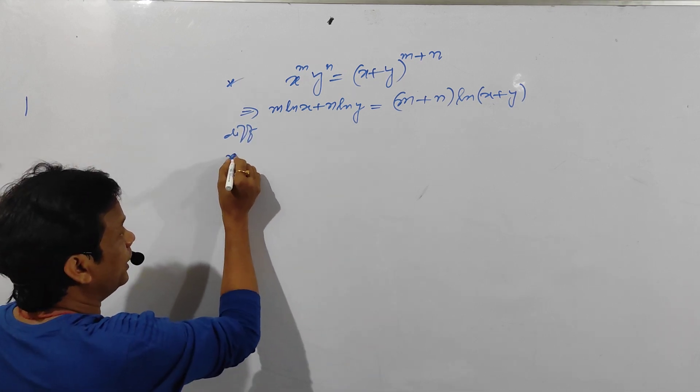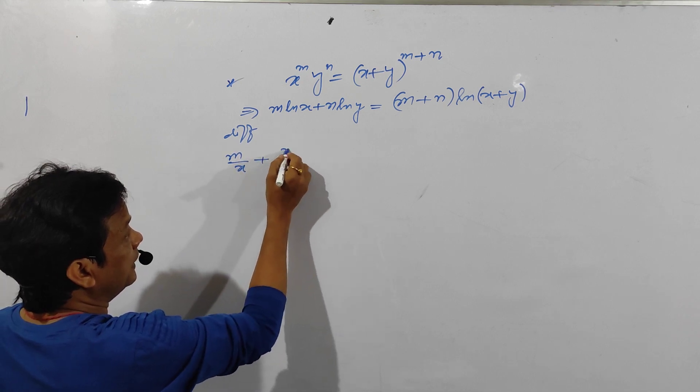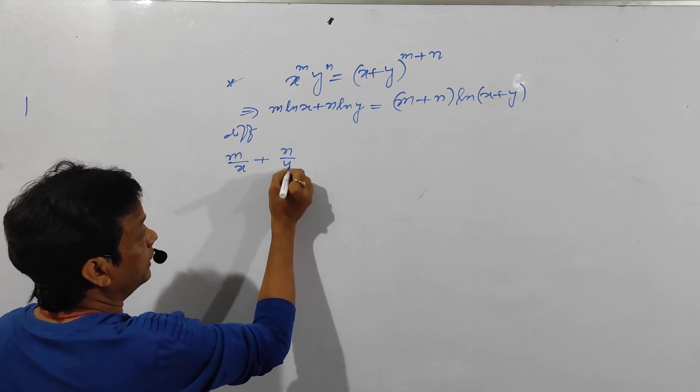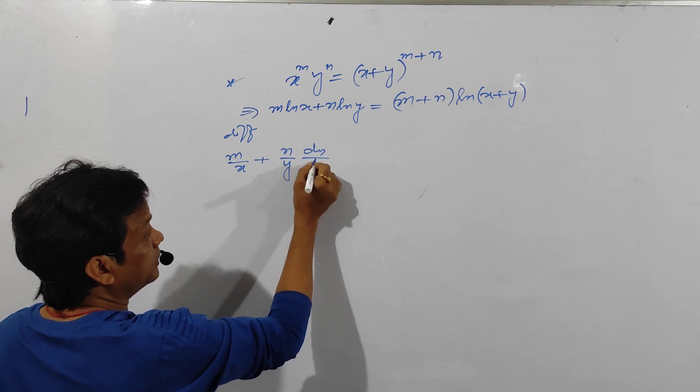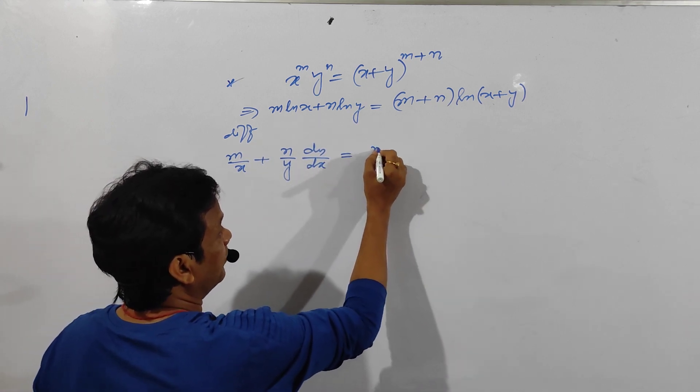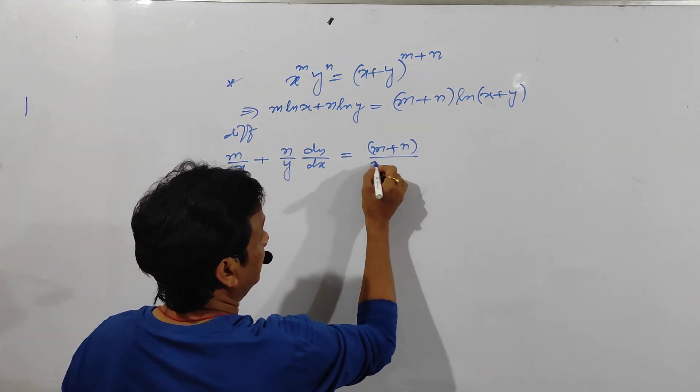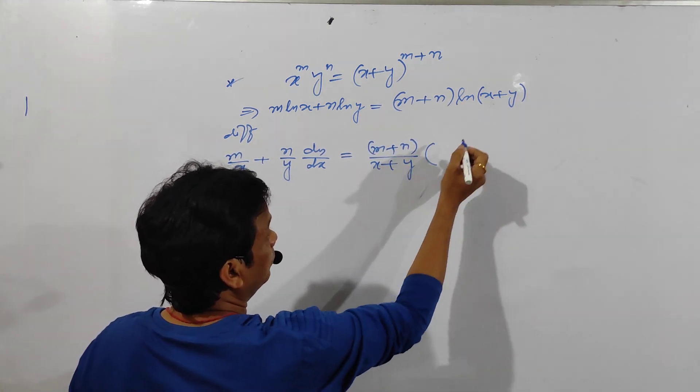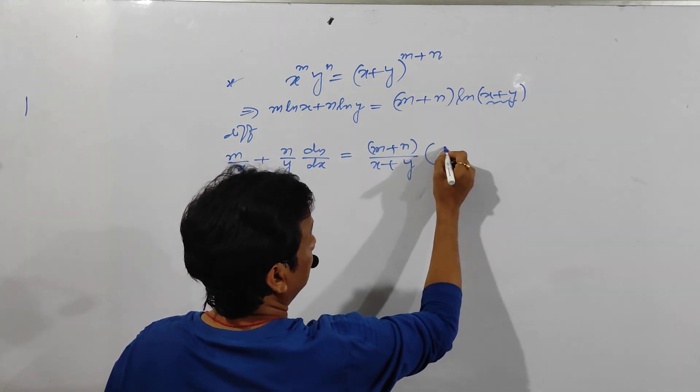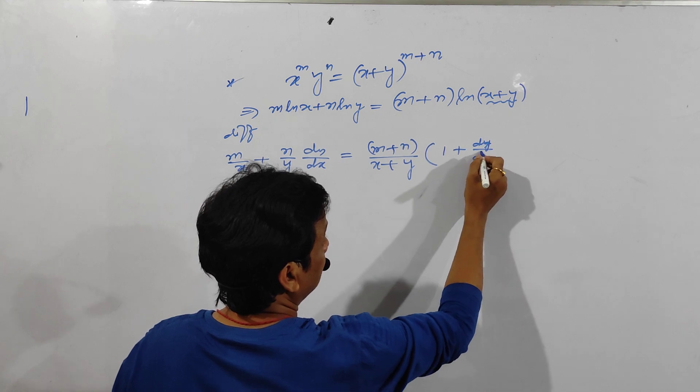Differentiating with respect to x, derivative of x is 1 by x plus n, derivative of log y is 1 by y into dy by dx. This equals m plus n, which is a constant, and log of x plus y becomes 1 by x plus y into derivative of x plus y. Delta x is 1 and delta y is dy by dx, clear.